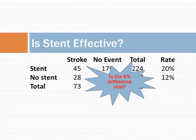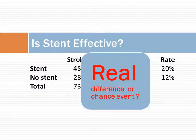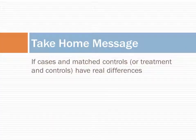An interesting question arises: is the 8% observed difference in the rate of strokes real? In other words, if we repeat our study, we would get a different set of numbers. It is possible that the 8% difference is due to natural variation in rate of strokes and has nothing to do with whether the patient had or had not received stent. Statistics is the science of establishing whether observed differences are real or due to chance. Statistics helps us understand if cases and matched controls or treatment and controls have real differences that will persist in repeated measurement and analysis.